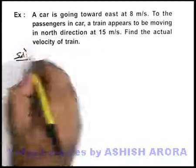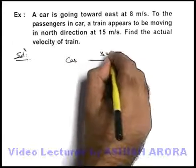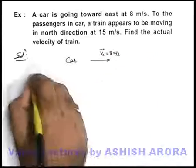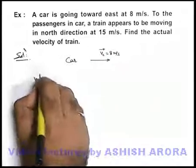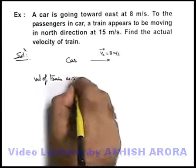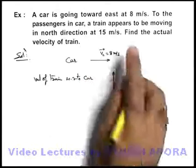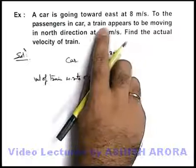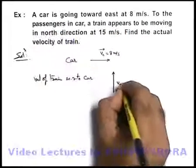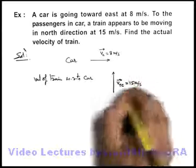In this situation, we can say that a car is moving toward east with velocity of car equal to 8 meters per second in the eastward direction. We are also given that the velocity of train with respect to car is in the north direction — that is the direction the train appears to be moving to passengers in the car — and it is 15 meters per second in the northward direction.